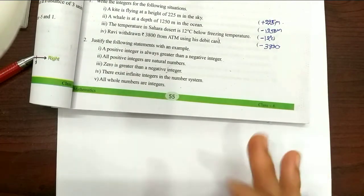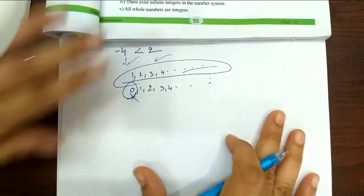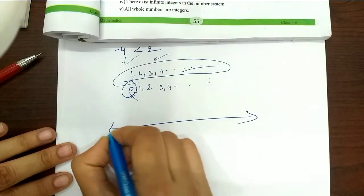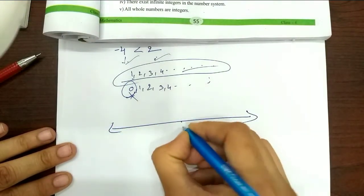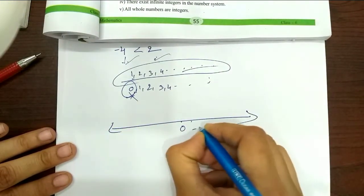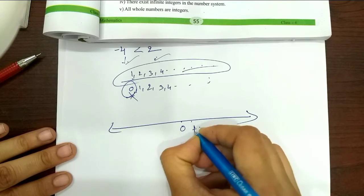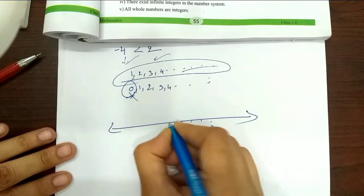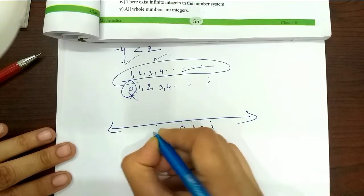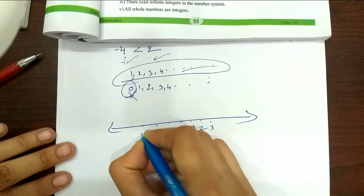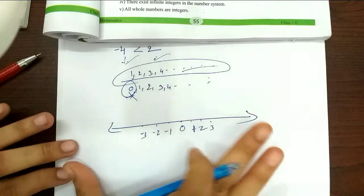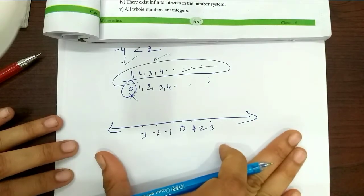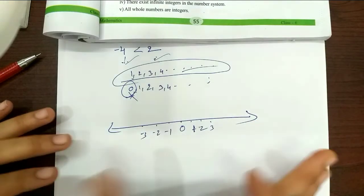The number system has 0 at the center. On the right side you have positive values: 1, 2, 3, and so on. On the left side are negative values: minus 1, minus 2, minus 3, minus 4, minus 5, and so on. So integers extend infinitely in both directions.